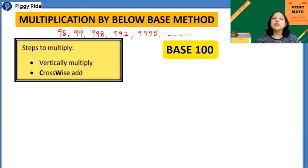Below Base 100, below Base 1000, below Base 10,000 and so on. So whenever you get multiplication of these type of numbers we can easily apply this below Base method to get the answer quickly and in few seconds. The steps are same like we discussed in above Base also: vertically multiply and then crosswise addition.